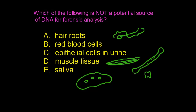In fact, the Unabomber was convicted partly on DNA evidence from a bomb that did not explode. So what we are left with is red blood cells.